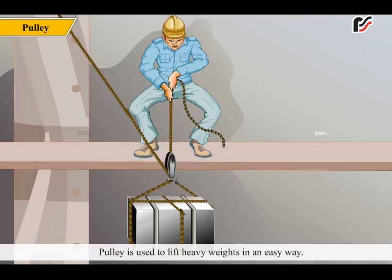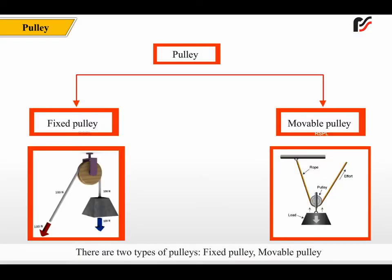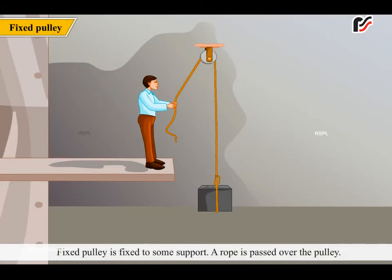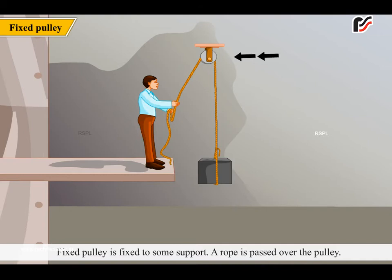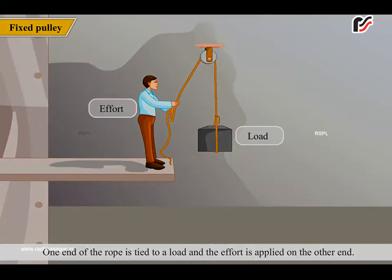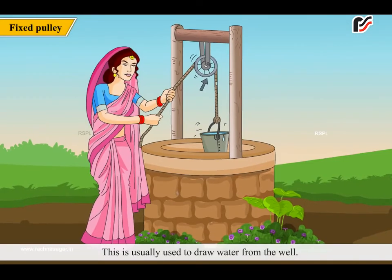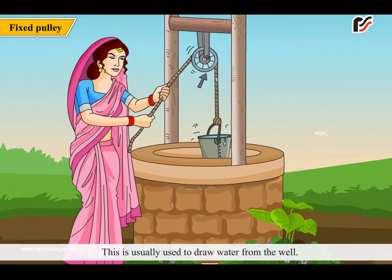A pulley is used to lift heavy weights in an easy way. It is a small wheel with a groove around its outer edge. This groove can hold a rope in position. There are two types of pulleys: fixed pulley and movable pulley. A fixed pulley is fixed to some support. A rope is passed over the pulley — one end is tied to a load and effort is applied on the other end. A similar small pulley is used on a flag pole to hoist the flag. This type is usually used to draw water from a well.